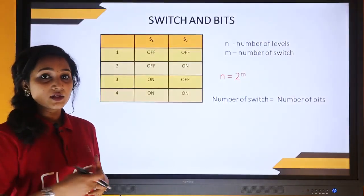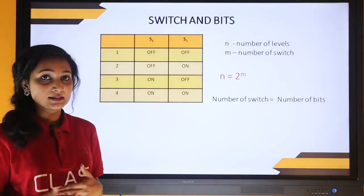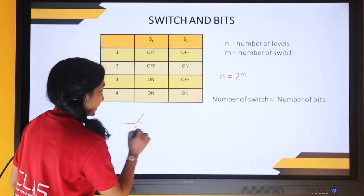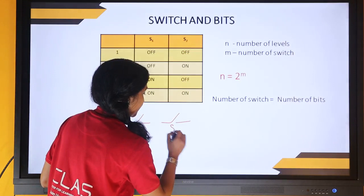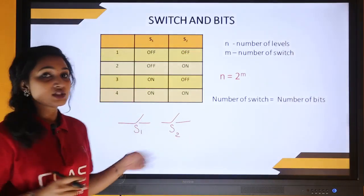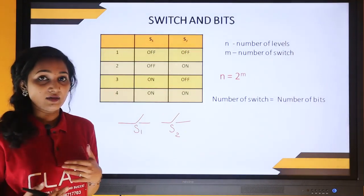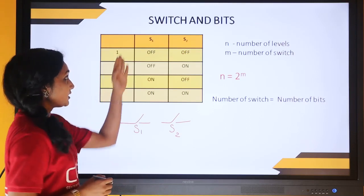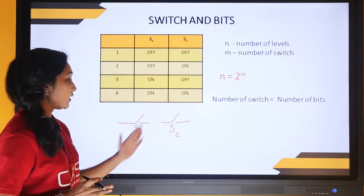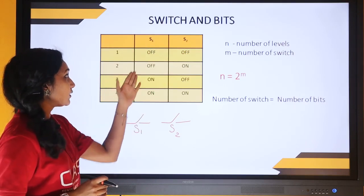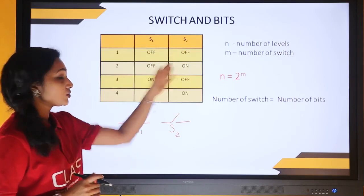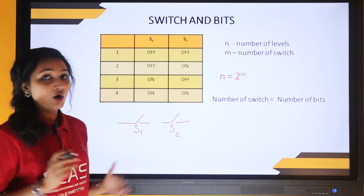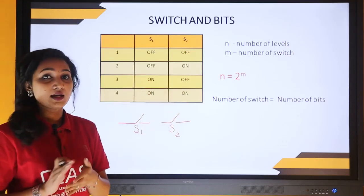Some common terms used in this subject are switch and bits. Consider two switches S1 and S2, as in electrical networks. Using these two switches, we can develop four conditions: both switches off; S1 off and S2 on; S1 on and S2 off; and both switches on.